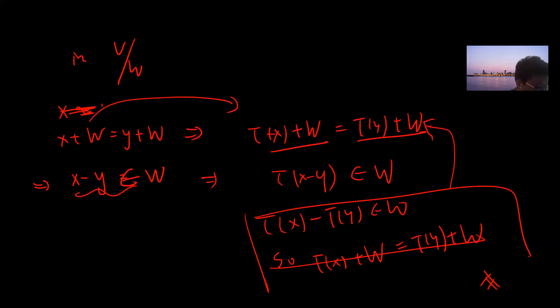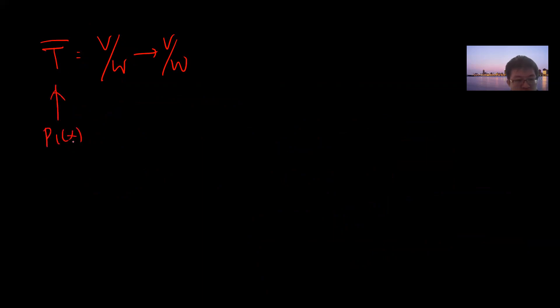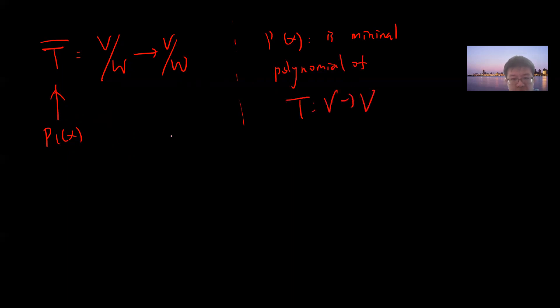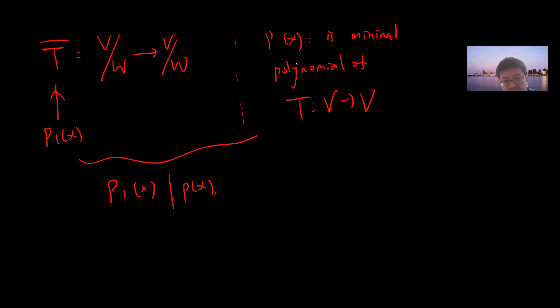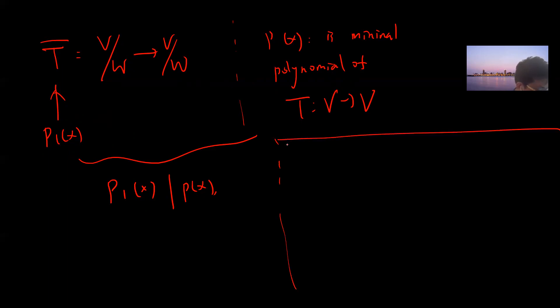Now we can ask: what is the minimum polynomial of T-bar? If p1(x) is the minimum polynomial of T-bar and p(x) is the minimum polynomial of the original T, I claim that p1(x) divides p(x).